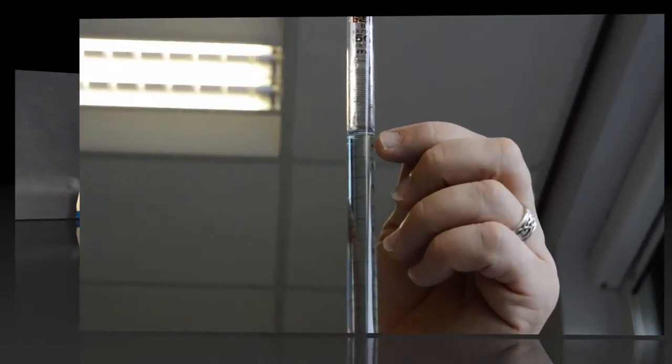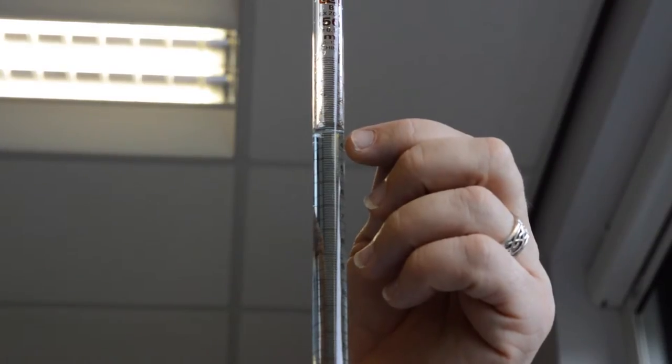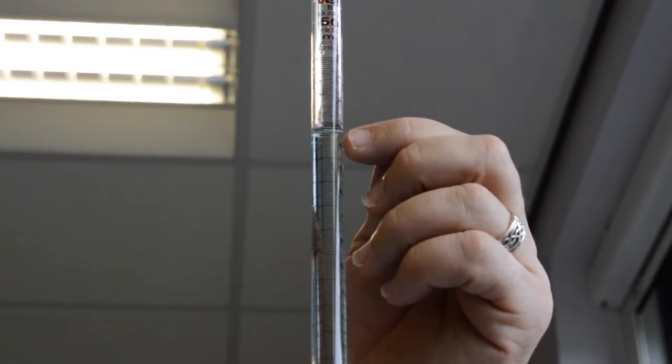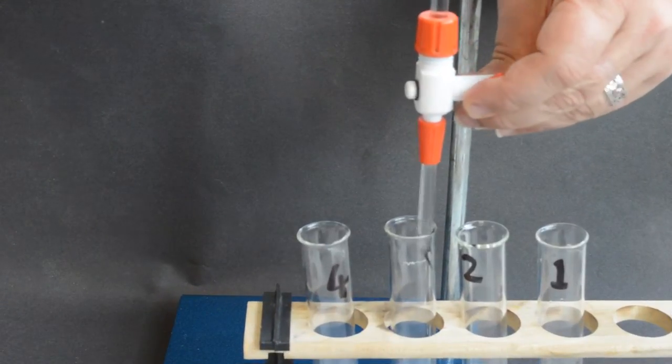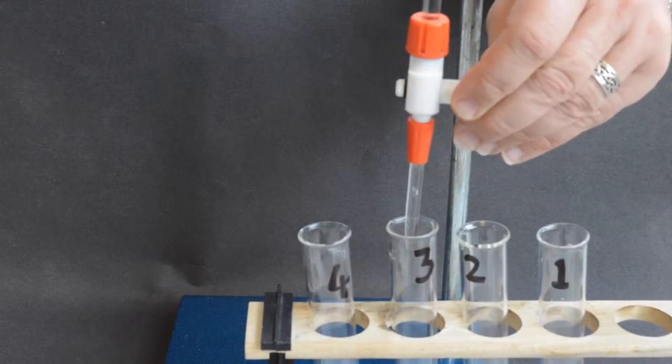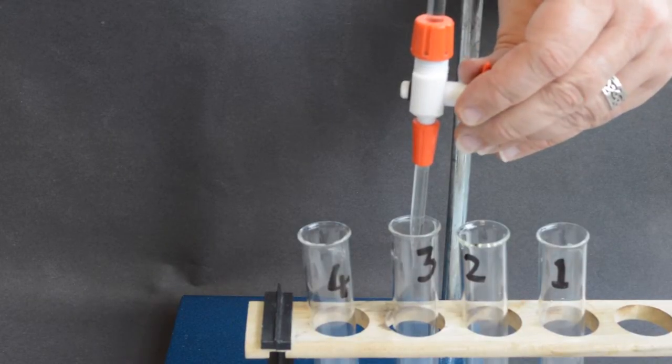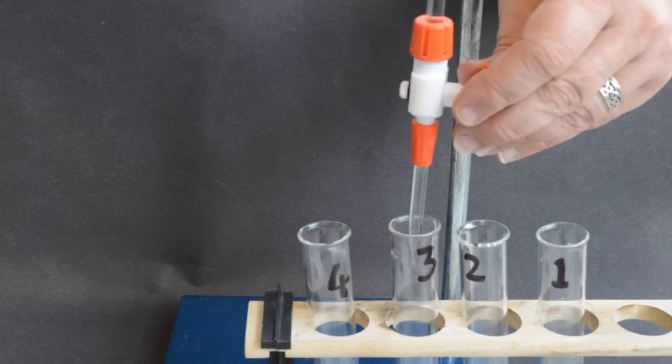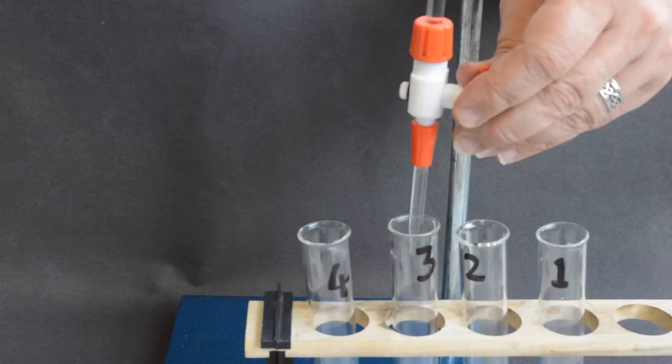Note the volume of copper sulfate remaining in the burette. Repeat this step with tube number three, adding three milliliters of copper sulfate to this tube, and continue through tubes four to nine, adding increasing volumes of copper sulfate to each tube.